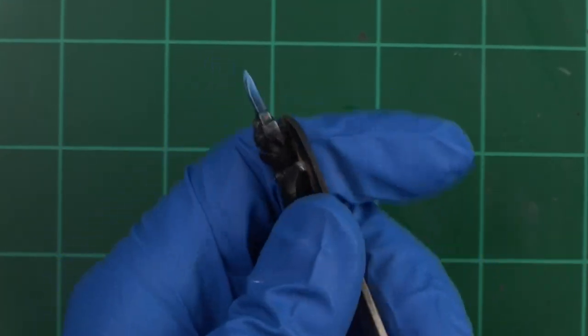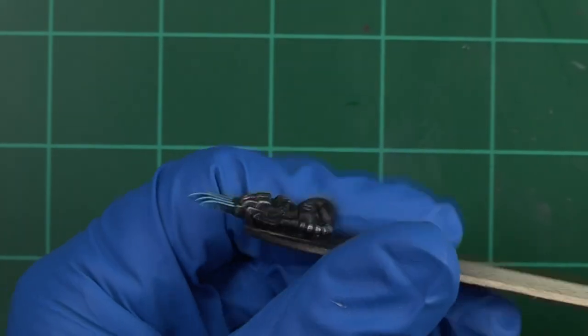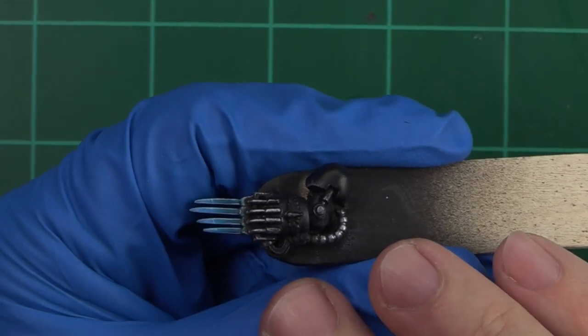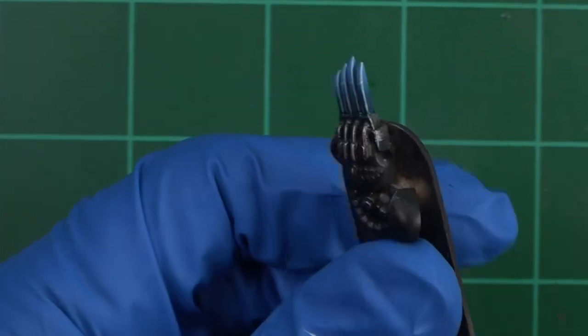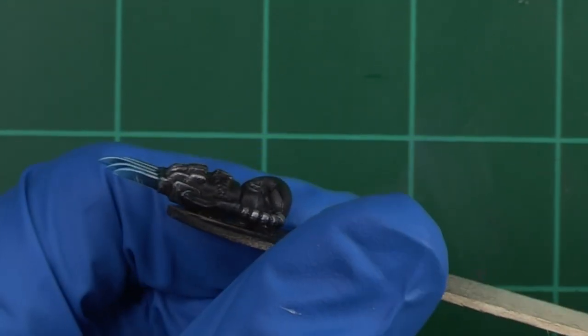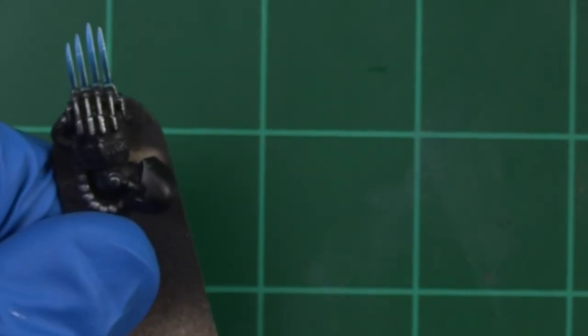And here we go, with a handful of paints and some really easy to follow and use techniques, we've got our completed lightning claws. With these tools in your toolbox, though, the sky really is the limit, and I encourage you guys to get out there, replicate this effect on your miniatures, maybe even try and change it up. Use some different colors or different washes and see what you can come up with.